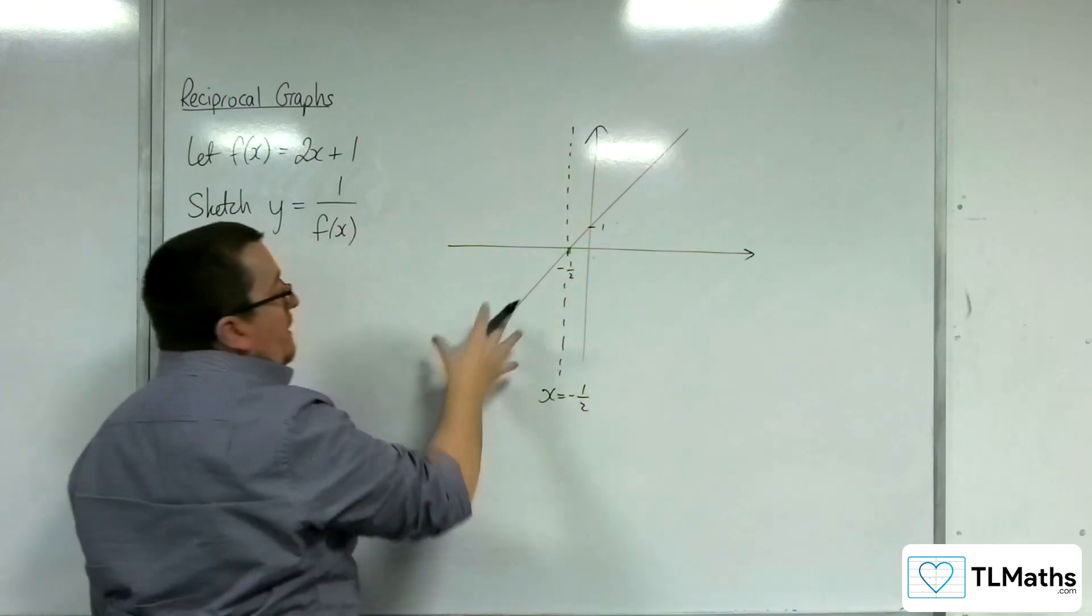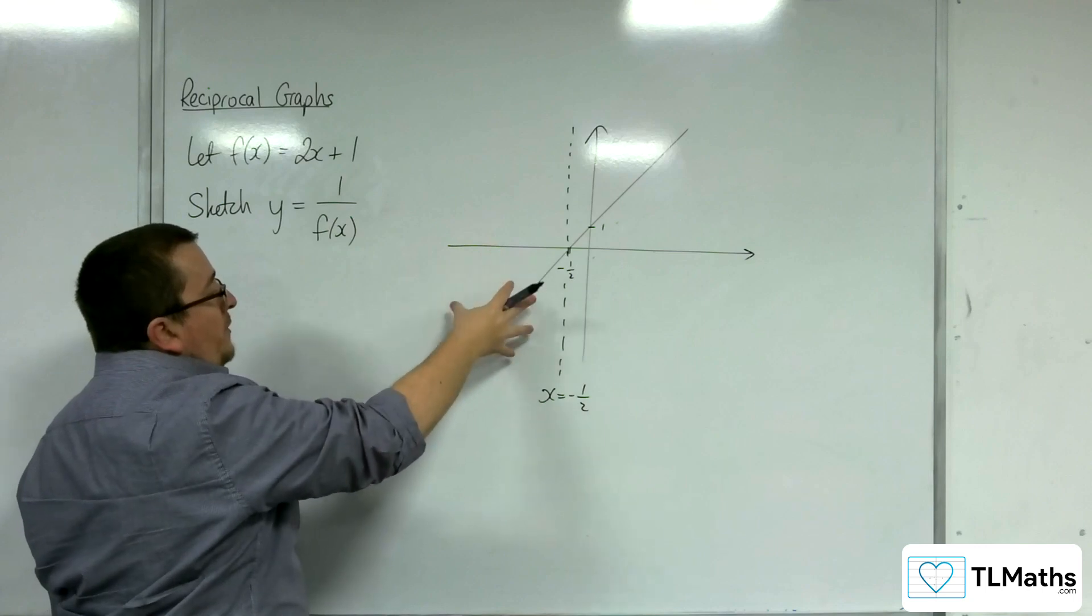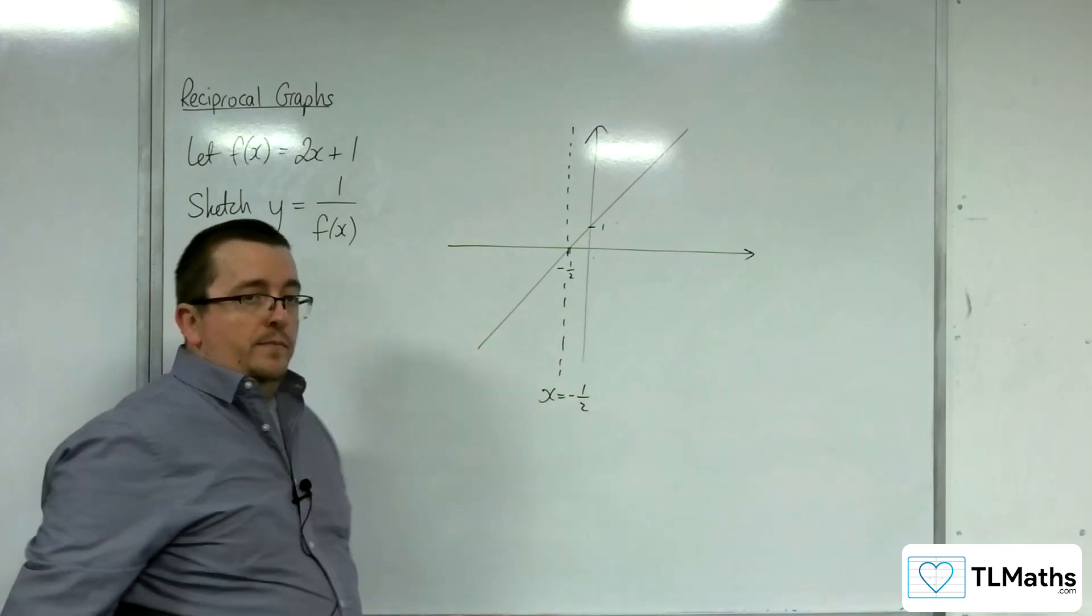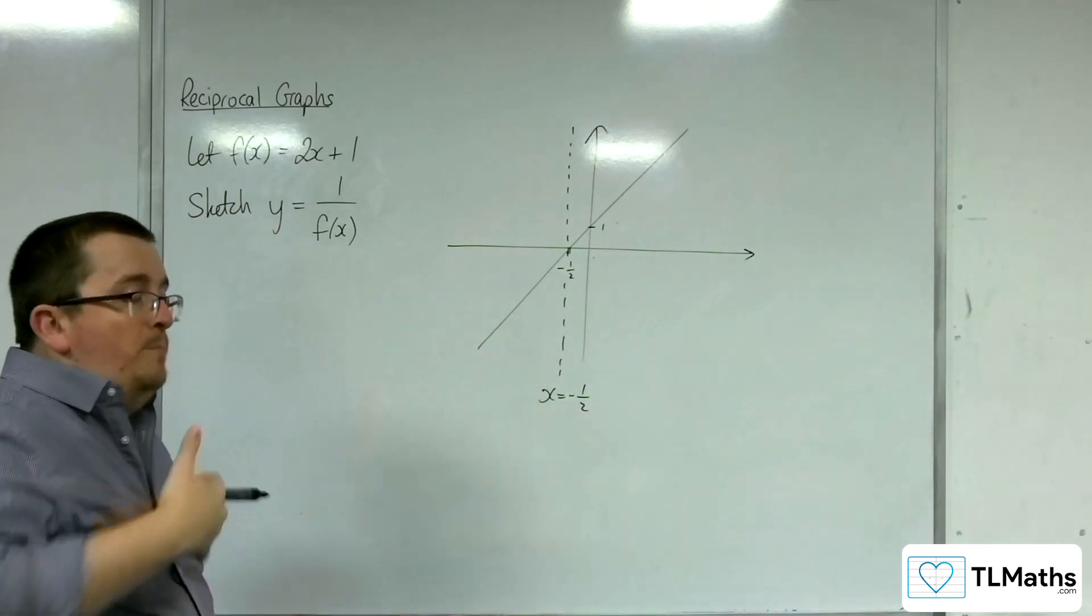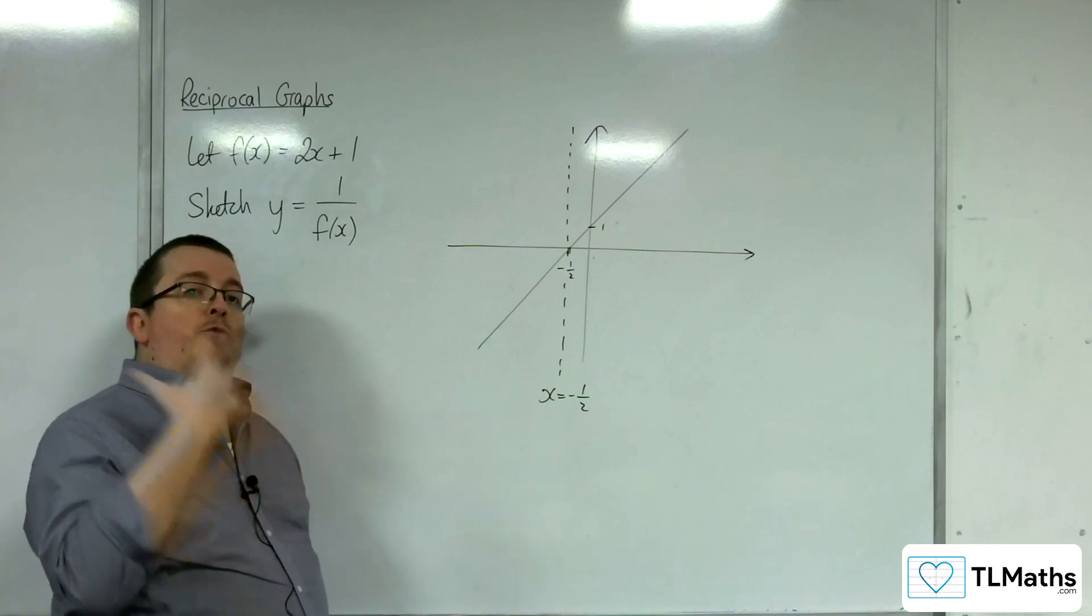And likewise, because f of x is negative here, 1 over f(x) is going to be negative. And so 1 over f(x) must be down here also. So we can build up that kind of picture just looking at the positive and negative nature of the original function.